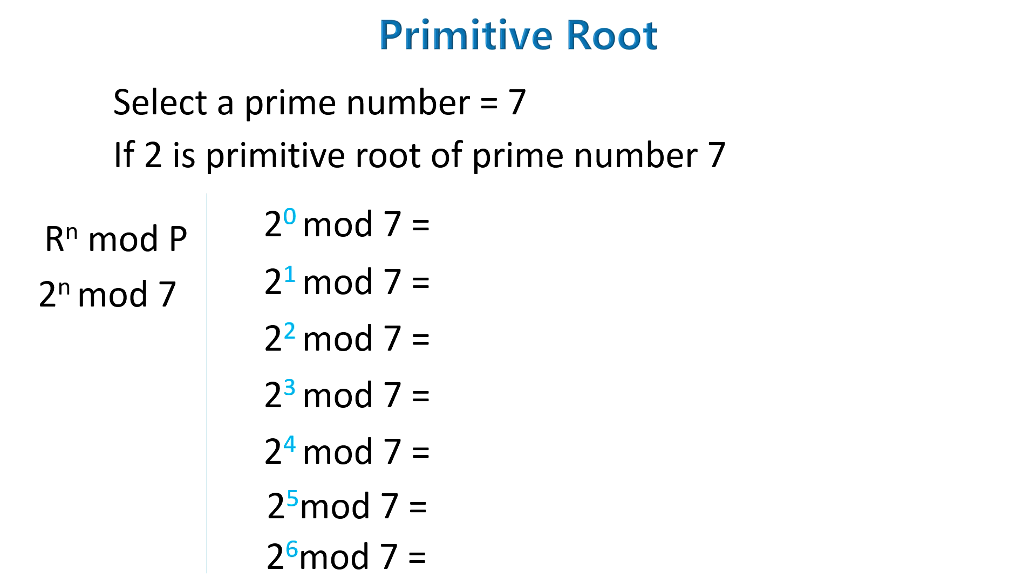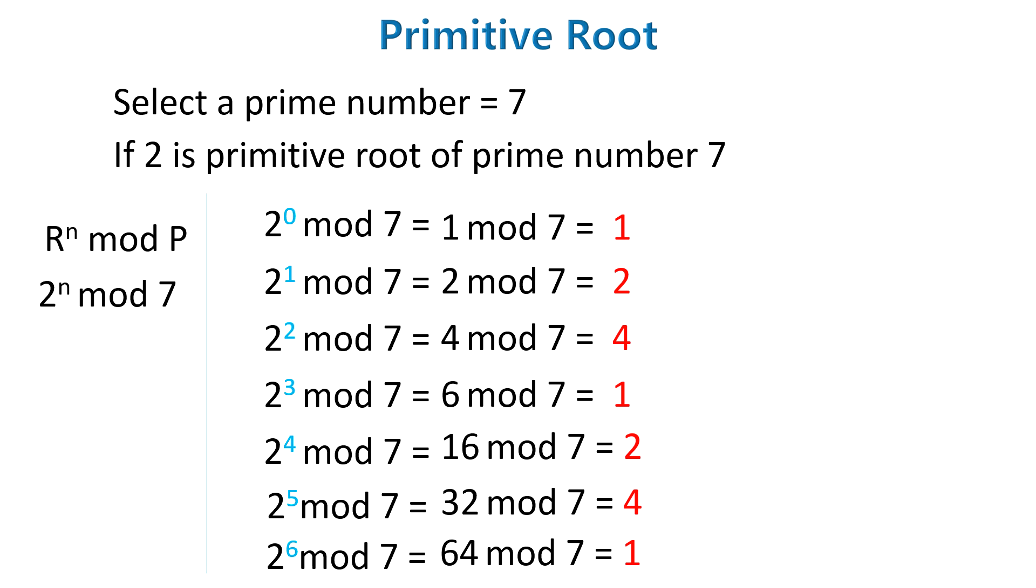Here are those inputs you see and here are the solutions for these inputs. As you see the output in the red color we are missing some values and those missing values are 3, 5 and 6. If 2 is a primitive root then output must be from 1 to 6 but it's not. So 2 is not a primitive root of a prime number 7.